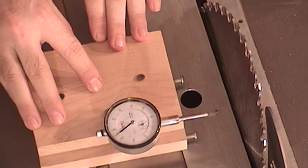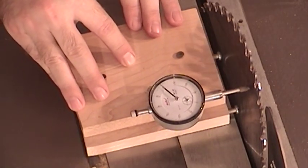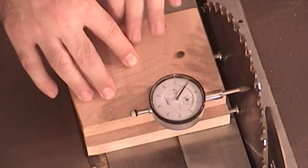Next, slide the jig into the table saw blade so that the two screws make contact with the blade at the bottom and zero the dial indicator.